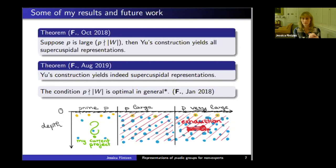Any other questions for the speaker? I have a question. When p is not sufficiently large, what's an example I should think of of a representation that doesn't come from this construction?